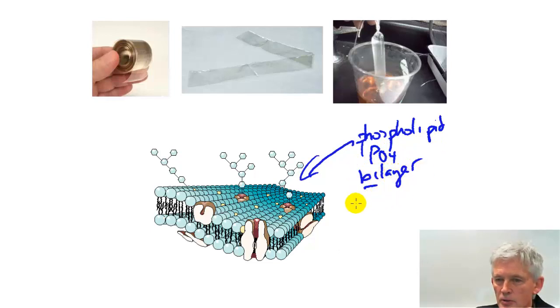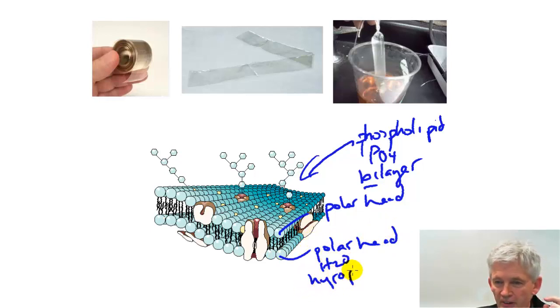Bi means two, so two layers. So there is one polar head here, and then there is another polar head down here. By polar I mean these are the sides that really love water. They are hydrophilic.